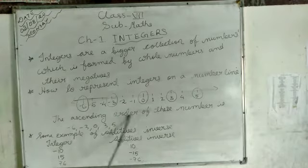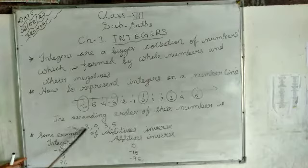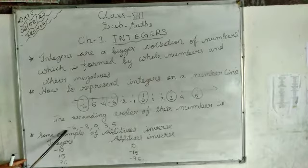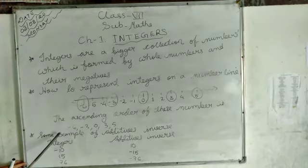The ascending order of these numbers is minus 6, minus 3, 0, 3, and 5. You might be thinking why minus 6 is bigger than minus 3. In negative numbers, the bigger number becomes the smaller one and the smaller number becomes the bigger one. Ascending means small to big. So minus 6 is the smallest number.